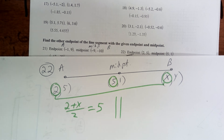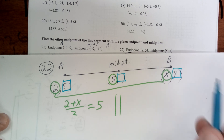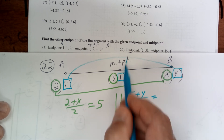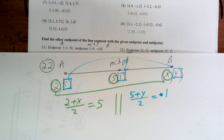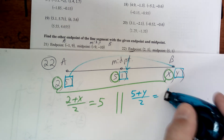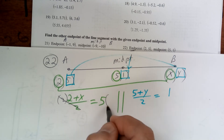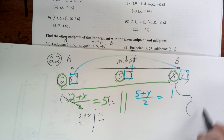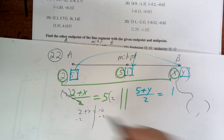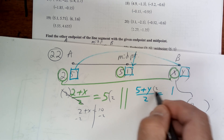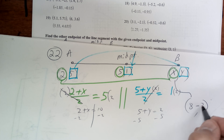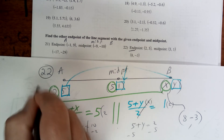Now let's do the y's — put a square around them. It's going to be 5 plus y divided by 2 equals positive 1. Let's finish it up: multiply by 2 to get 2 plus x equals 10, subtract 2 and x equals 8. For y, multiply by 2: 5 plus y equals 2, subtract 5 and y equals negative 3. That's your answer. Put a star by this — I gave you two examples, now it's your turn. Go ahead and finish this work.